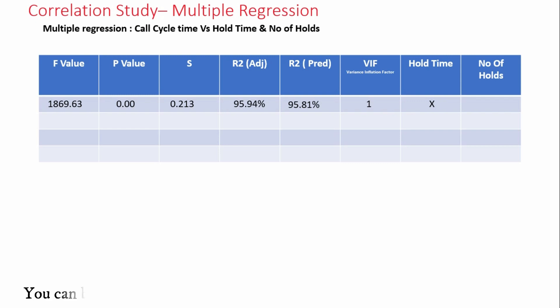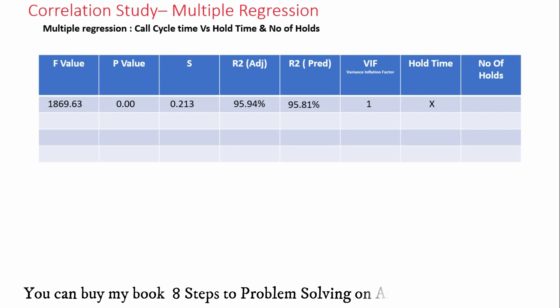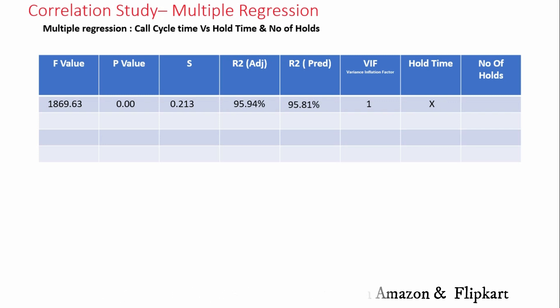R-square adjusted value is 95.94 and R-square prediction is 95.81. The difference between R-square adjusted and R-square prediction should not be high for a good model, and in this case it is working well for us. The VIF value — Variance Inflation Factor — is 1. This value should be 1 or very close to 1, and it says that there is no multicollinearity.